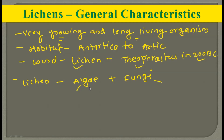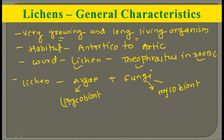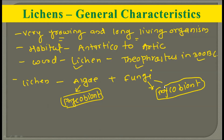The partner which belongs to the algal group is called phycobiont, while the partner which belongs to the fungi is called mycobiont. You should remember these terms as they are very important. The algal partner in the lichen is called phycobiont while the fungal partner in the lichen is called mycobiont. Both partners come together to form the lichen as an organism.